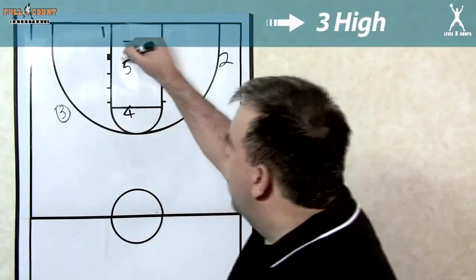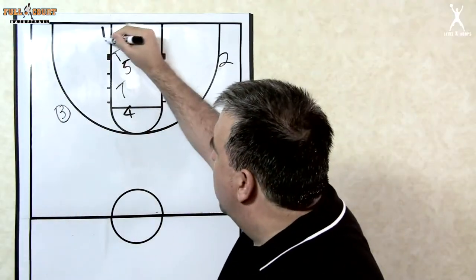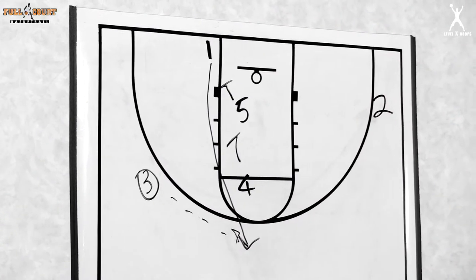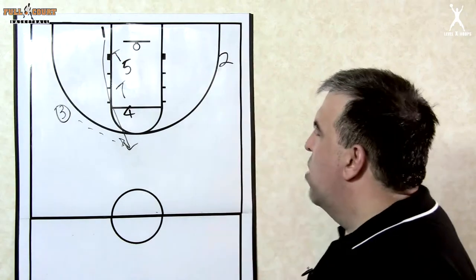Once the ball's inbounded to three, five and four are both going to come in and set a staggered screen for one. So one comes up to the top. Once one catches, obviously if one can catch and drive it, you'd want to go ahead and do that.